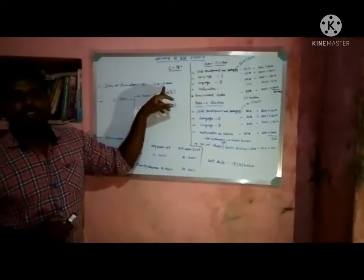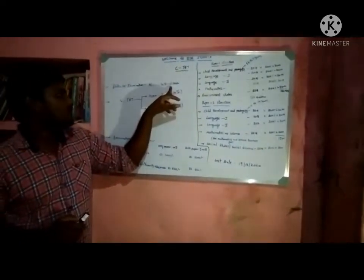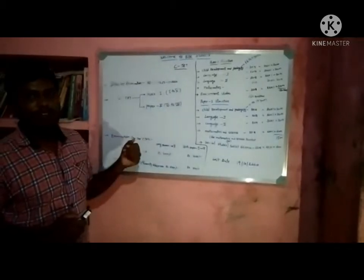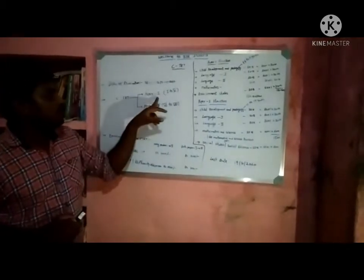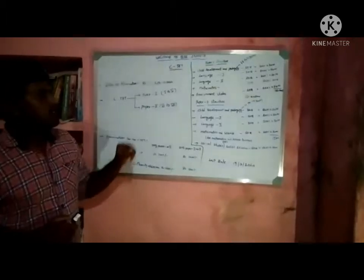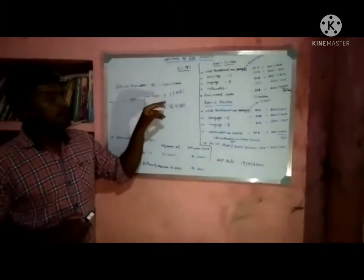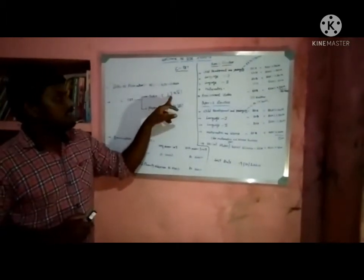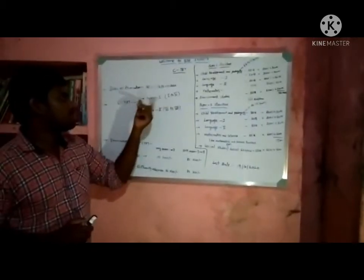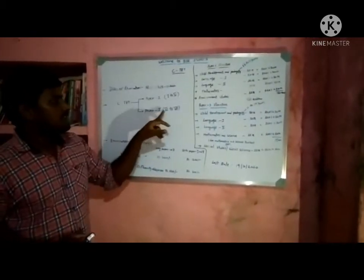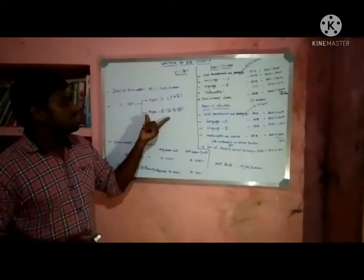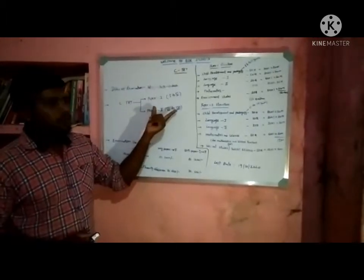When the student came, you might need two exams for computer-based exams. So if you take a look at CTET, a paper has paper 1 and paper 2 — first class and fifth class. This is how paper 1 and paper 2 are structured. Paper 2 is paper 2.